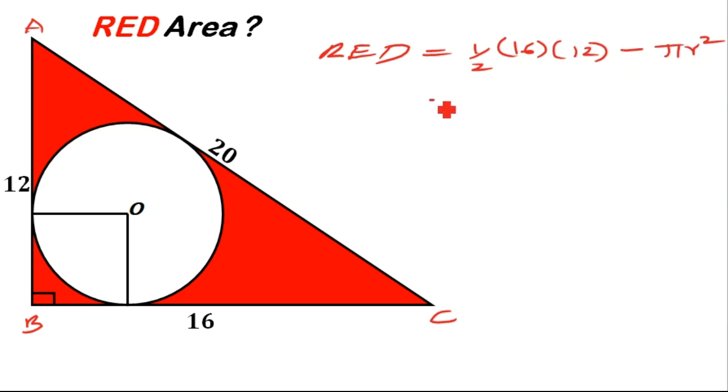Now if you simplify this, one half times 16 times 12, you will get 96 then minus pi R squared. So it means the red area will be 96 minus pi R squared.